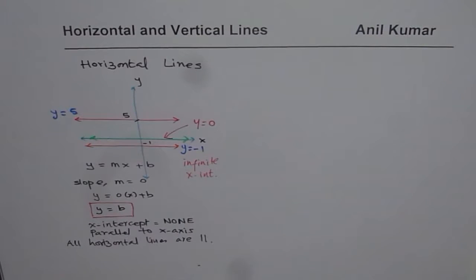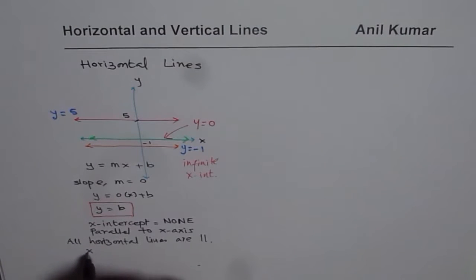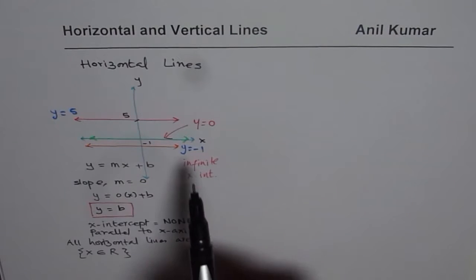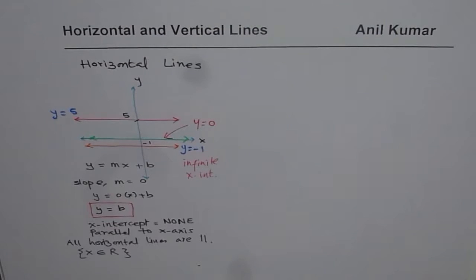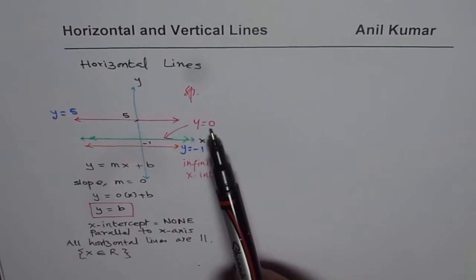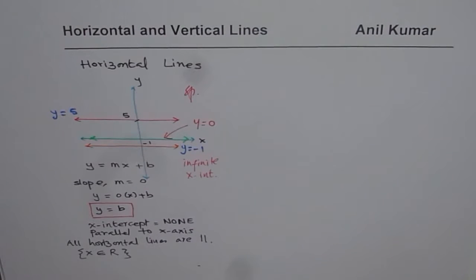All horizontal lines can have any value of x, so x belongs to real numbers — horizontal lines have no restrictions on x. There is one very special case where the horizontal line is along the x-axis, whose equation is y equals to 0, and this horizontal line has an infinite number of x-intercepts. That is a summary of horizontal lines — all these lines are parallel to one another.